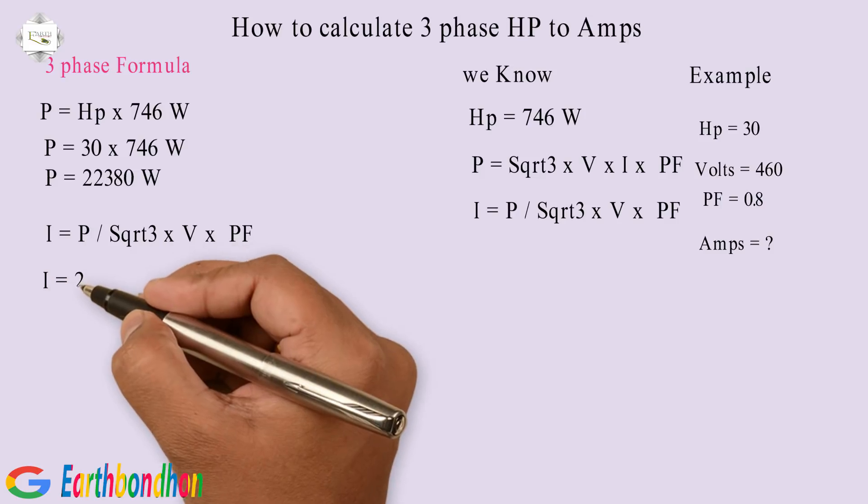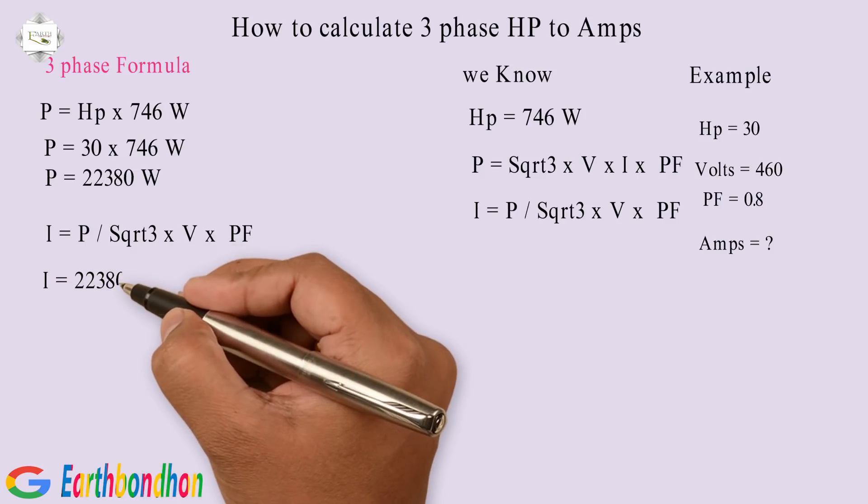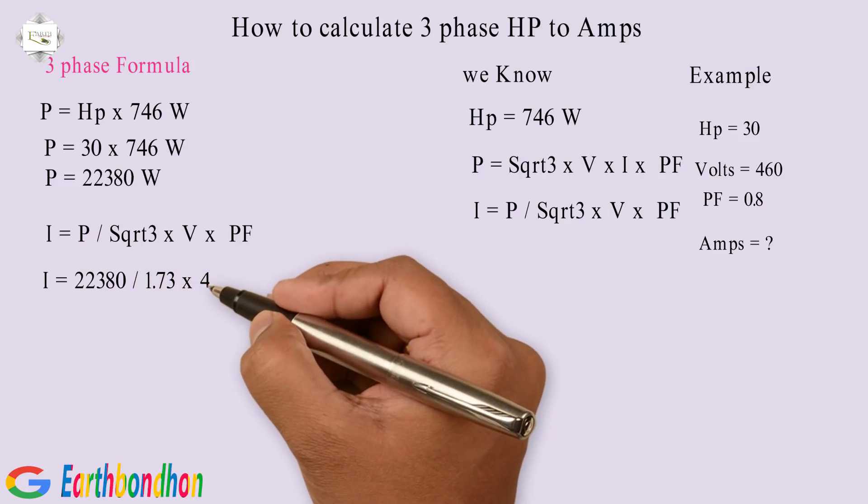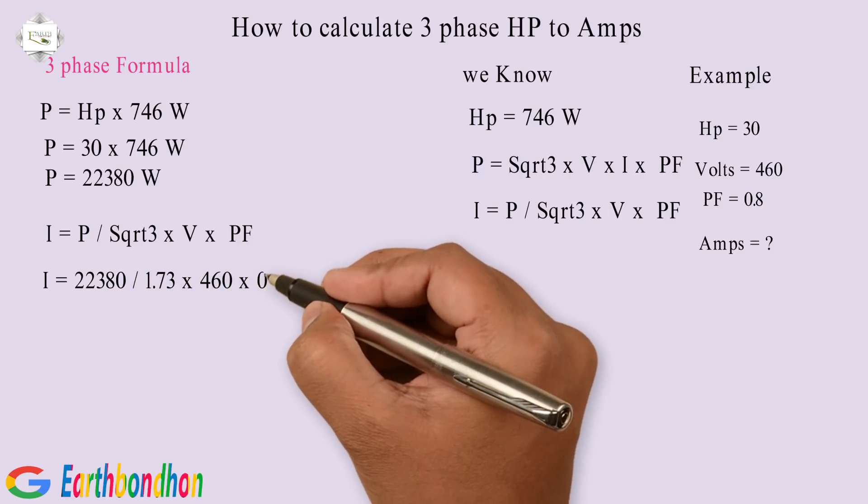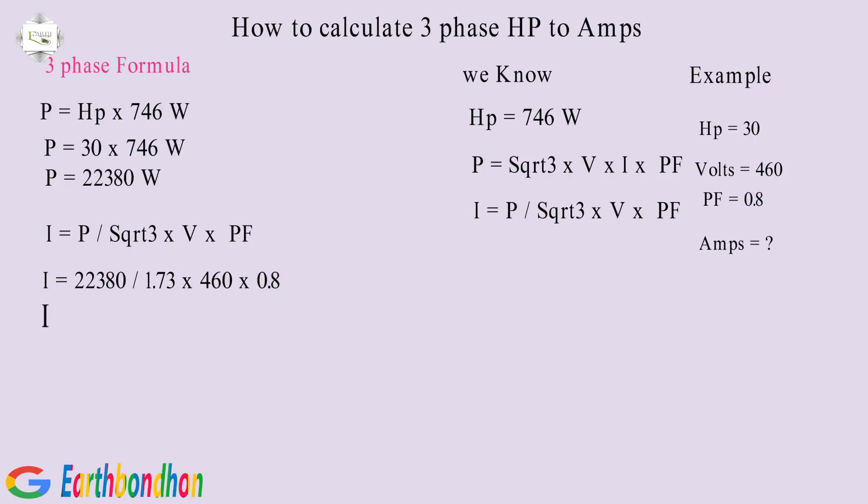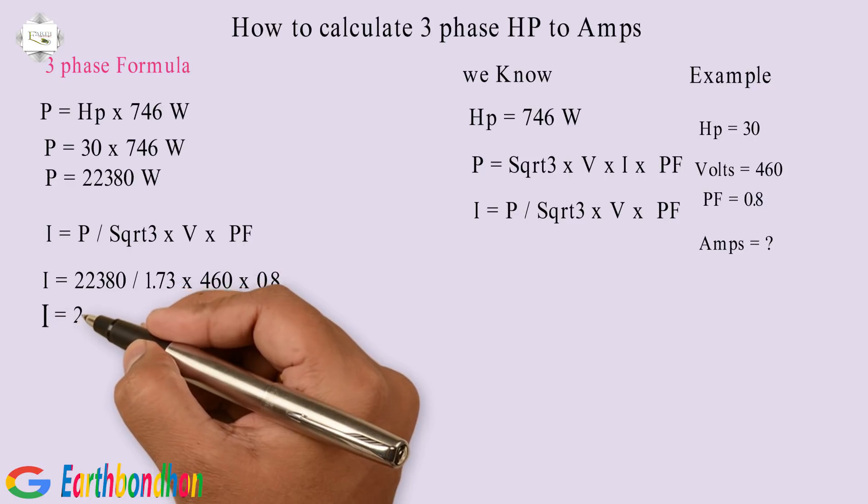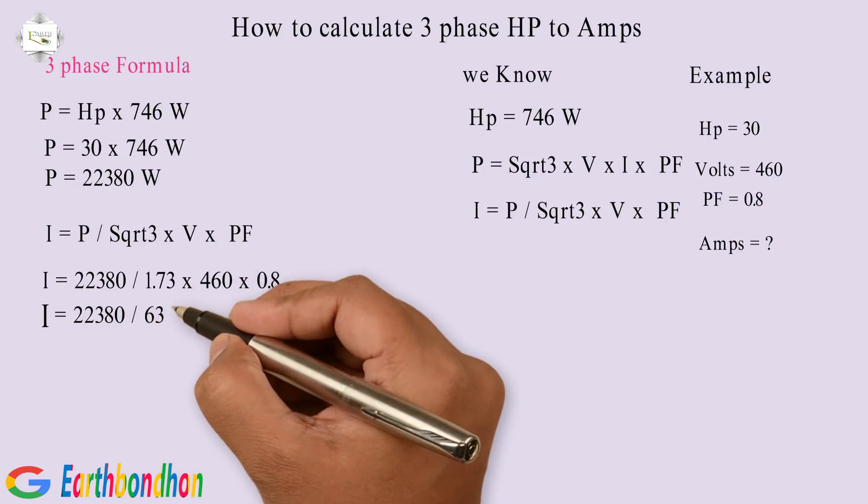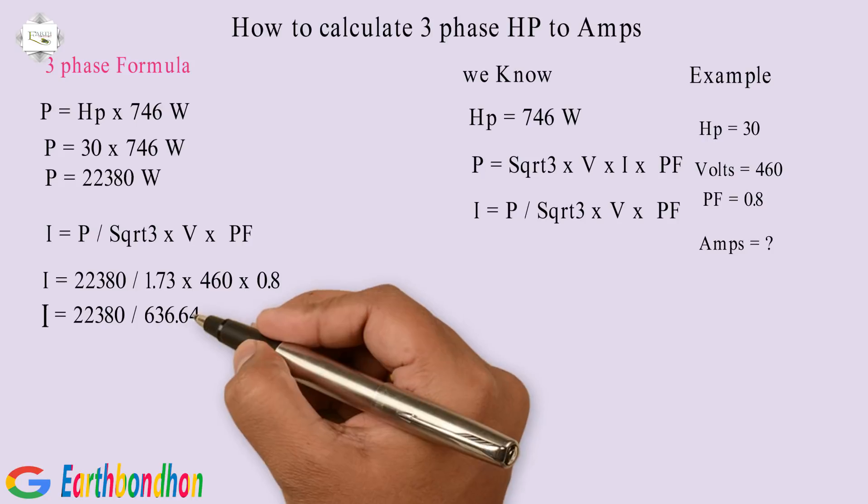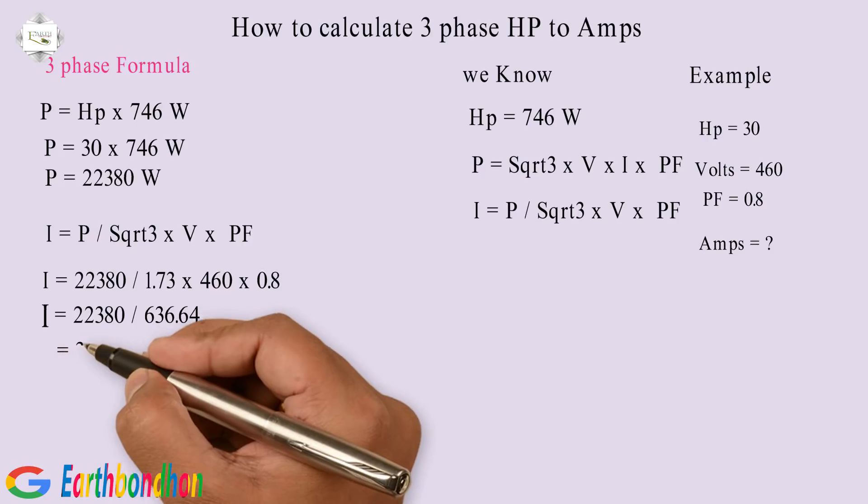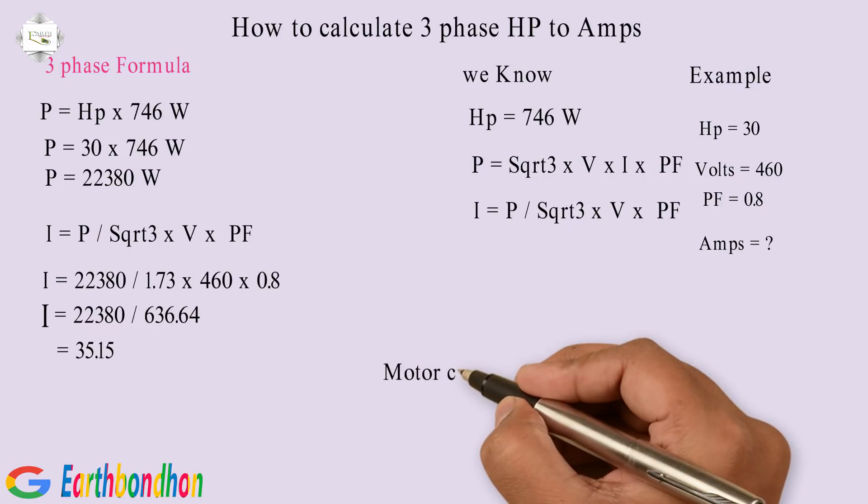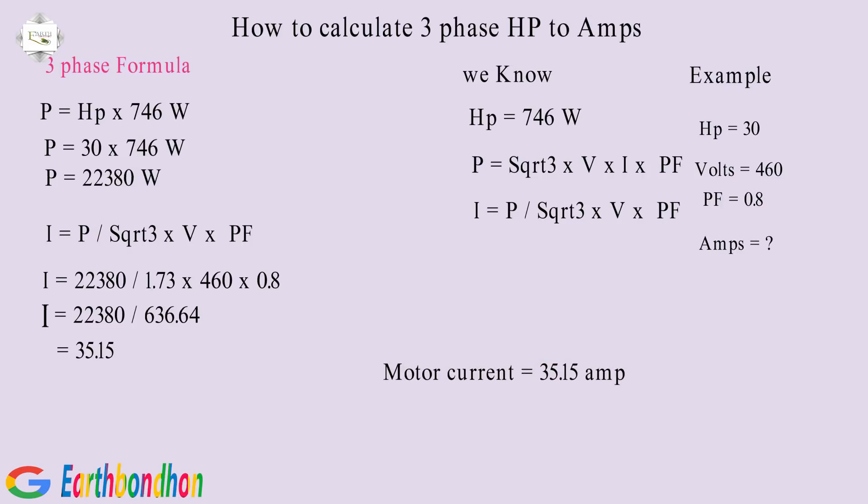I equals 22,380 division 1.73 multiplication 460 multiplication 0.8, equals 22,380 division 636.64, equals 35.15. Motor current equals 35.15 amps.